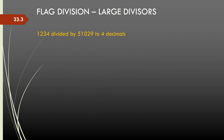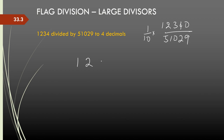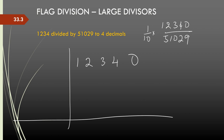Now let us look at how we can do some divisions which appear very difficult. For example, dividing 1234 by 51029. This is the same as one-tenth of 12340 divided by 51029. I will divide 12340 by 51029. It is good to have the same number of digits first. So 5 is the divisor, and instead of 1029 I will use the vinculum form: 51029 converts to 5 1 0 3-bar 1.